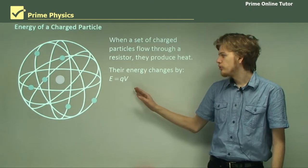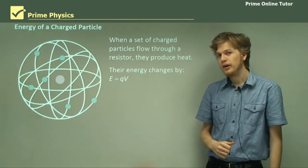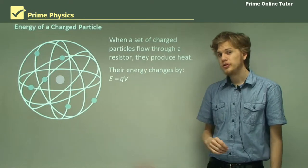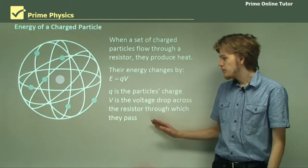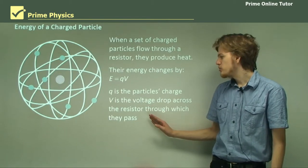So the energy of an electron, as it goes through a resistor, changes by E equals QV. The electron's charge times the voltage through which it passes. So Q is the particle's charge, V is the voltage drop across the resistor.